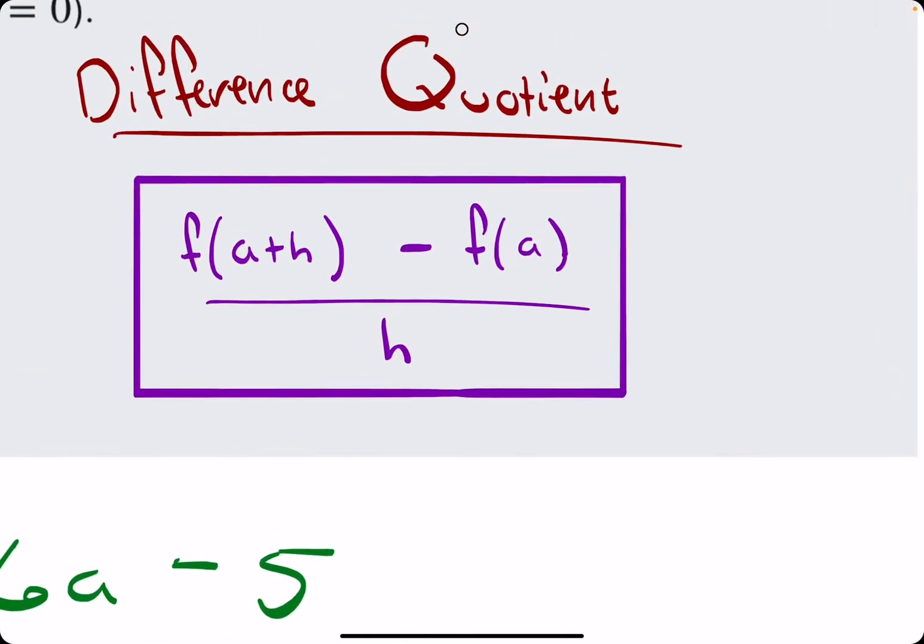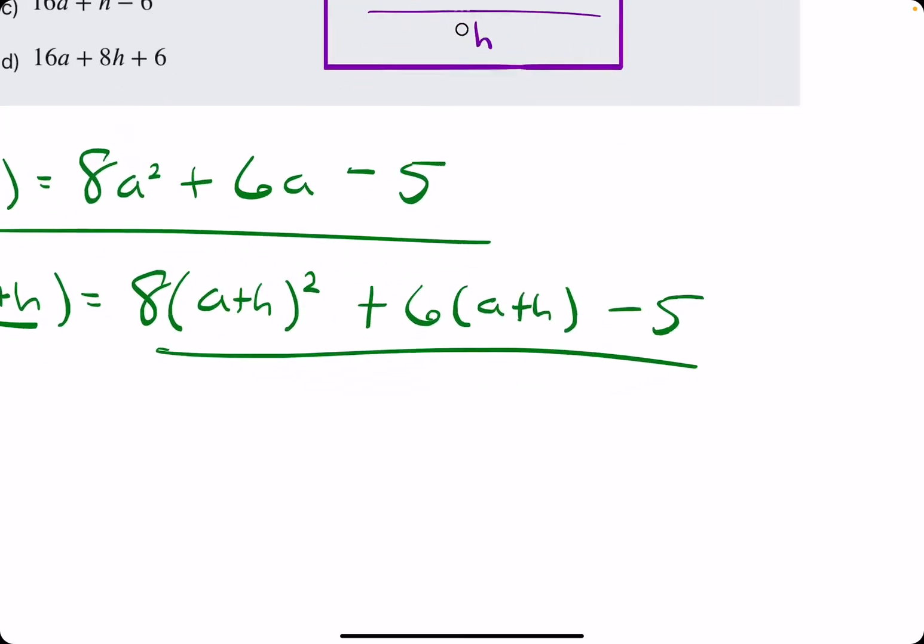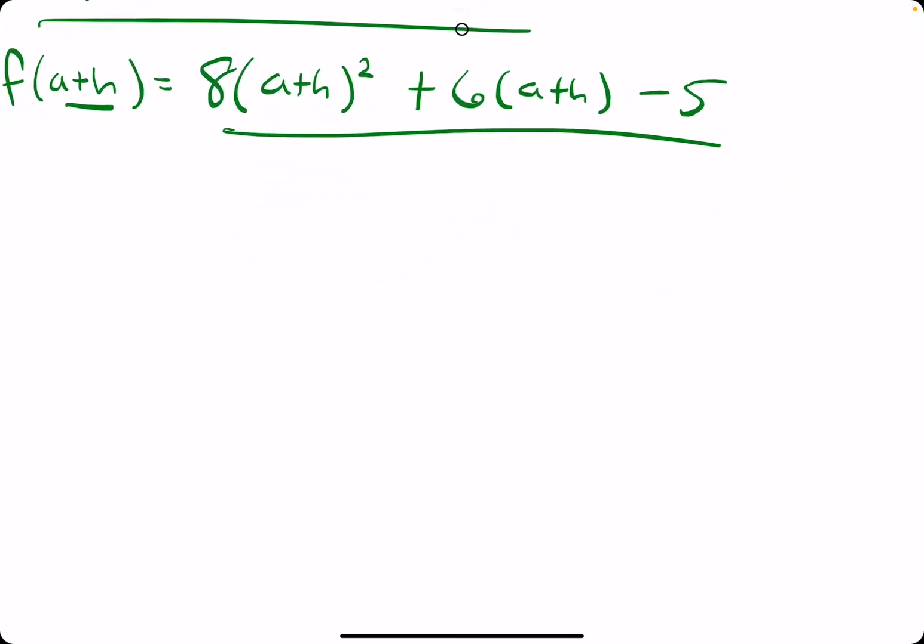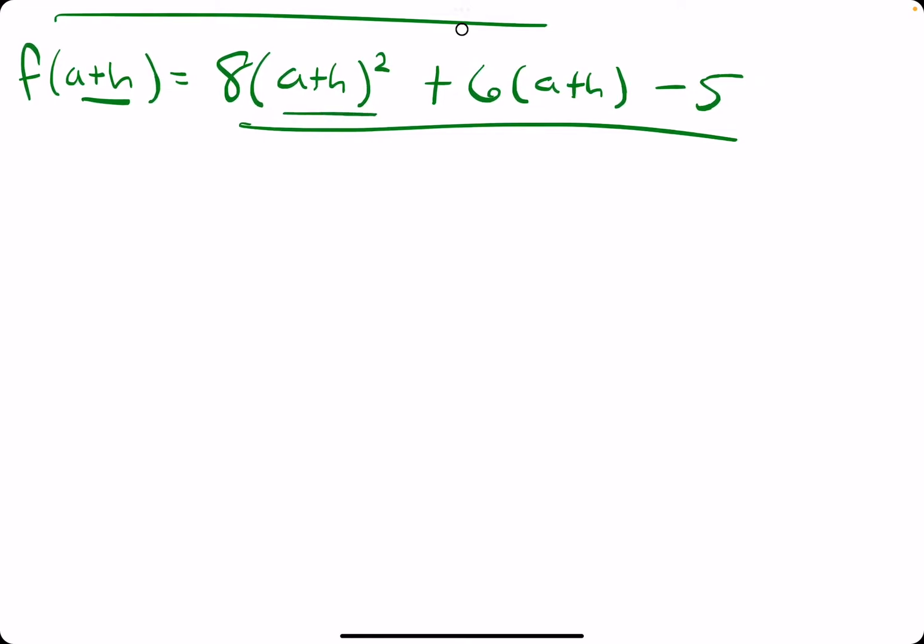So, this is f of a plus h, but we don't want to go ahead and plug it into the difference quotient, yet we want to expand everything we have here. The biggest thing, one of the common mistakes in this problem, is expanding a plus h squared. It won't be just a² plus h². It instead will be what we get when we literally do a plus h times a plus h.